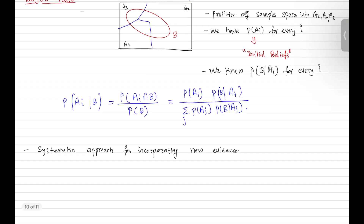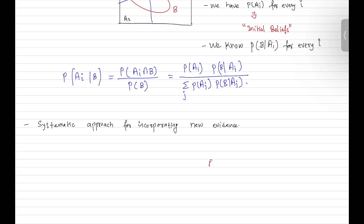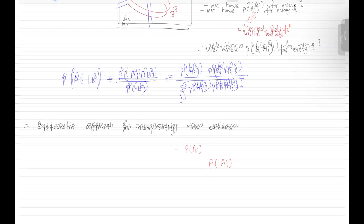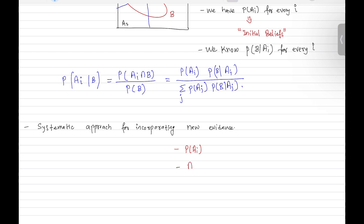So the current model we have is: first, a prior belief about our scenarios; second, the different scenarios themselves; and third, event B with the known probability of B under each scenario. Let's suppose we do the experiment and event B has occurred. Now we know event B has occurred, and using this information or evidence, we make inferences about the likelihood of each scenario.